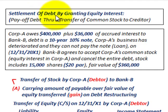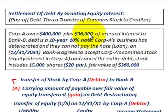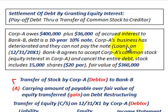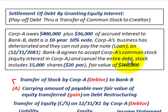We're going to be looking at settlement of debt by granting equity interest — paying off some debt through a transfer of common stock to the creditor. Corporation A owes $400,000 plus $36,000 in accrued interest to Bank B in the form of a 10-year 10% note. Corp A's business has deteriorated and they cannot pay the note. On 12/31/X1, Bank B agrees to accept Corp A's common stock — 15,000 shares of $20 par stock with a fair value of $360,000 — and cancel the entire debt.